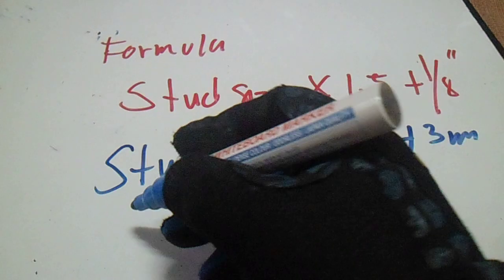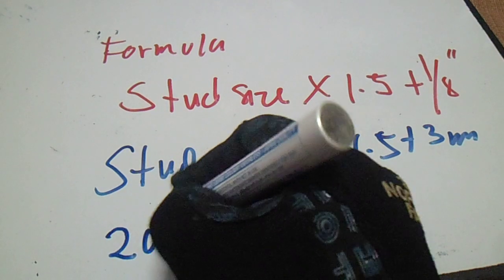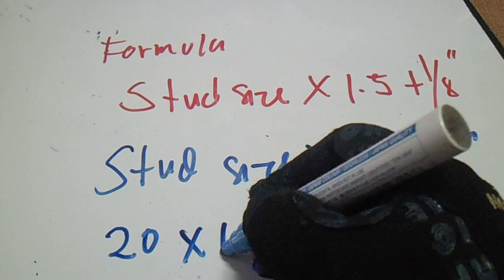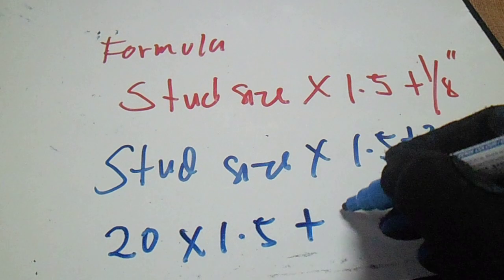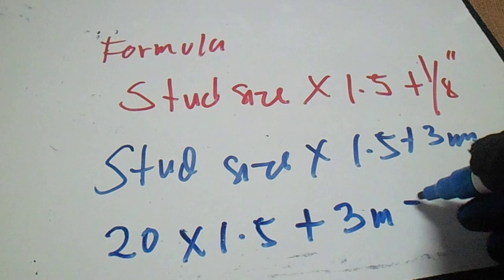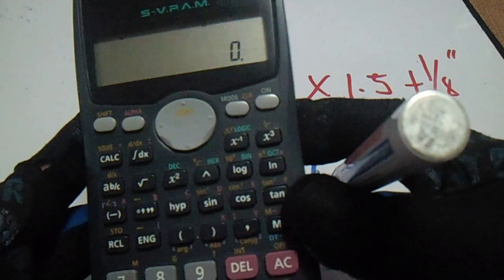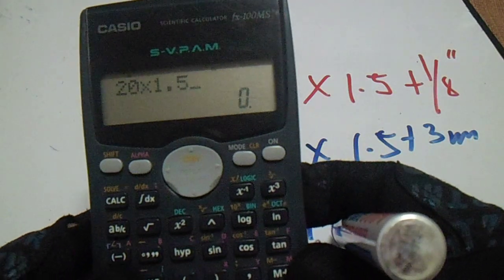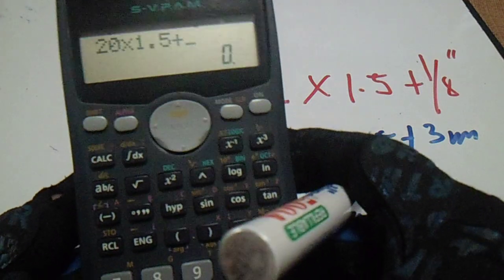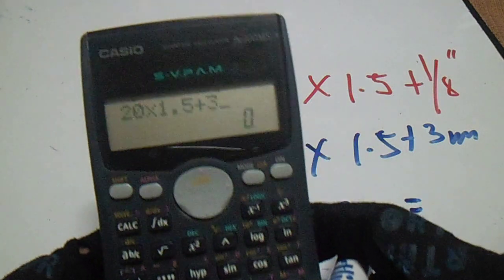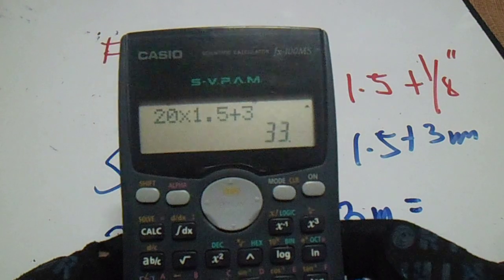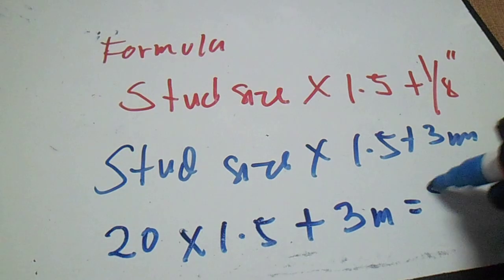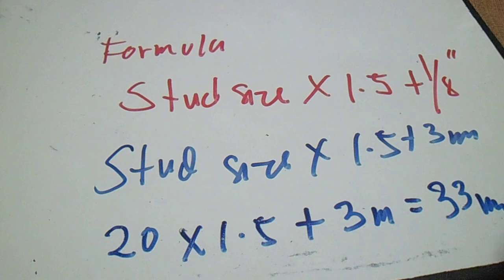For example, we have a 20 x 1.5 plus 3mm. 20 x 1.5 plus 3 equals 33mm. So we have an answer of 33mm.